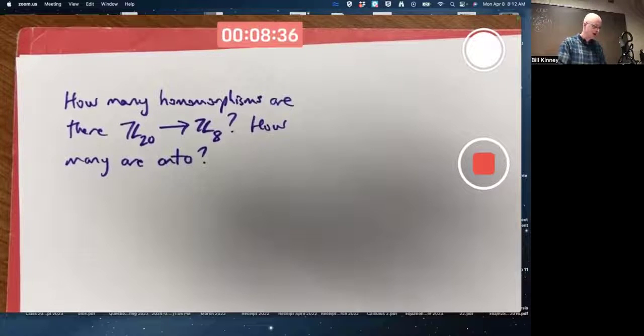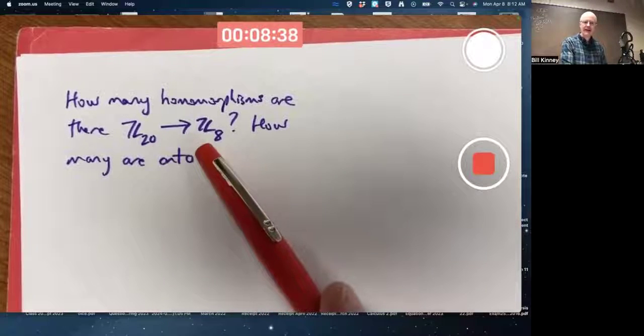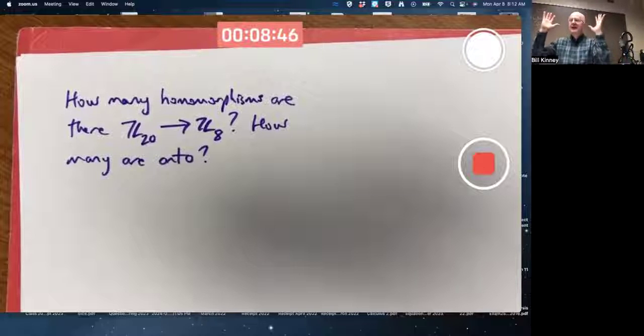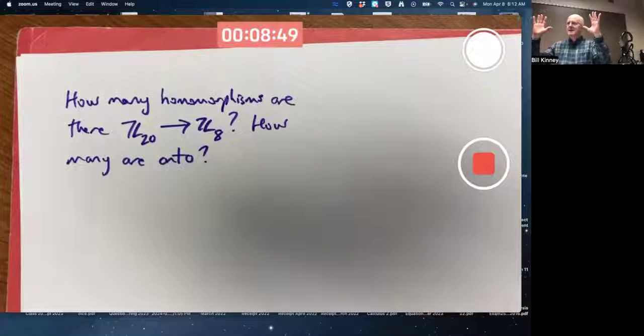This problem says how many homomorphisms are there from Z20 to Z8? First key big ideas: homomorphisms.